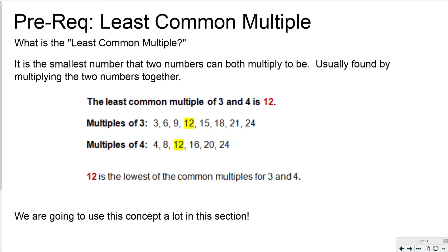Usually the easiest way to find the least common multiple is to multiply the numbers by each other, but when you have cases like 2 and 4, the LCM is 4 because 4 times 1 is 4 and 2 times 2 is 4. It varies from case to case, but usually you can just multiply the two numbers or two expressions together to make the least common multiple.